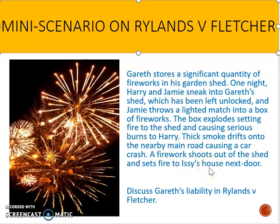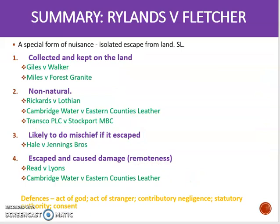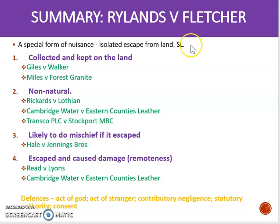Before we look in detail at what's happened and start highlighting it as we would in the exam, it's useful to remind ourselves of the requirements for Rylands and Fletcher. Rylands and Fletcher is an ancient tort from the case of the same name. It's a very special form of nuisance that relates to an isolated, meaning one-off, escape from land. It's strict liability, so we don't require any fault on the part of the defendant. That might have struck you when reading the Gareth scenario — it doesn't really seem to be Gareth's fault that things escaped from his land, but he could potentially be liable.